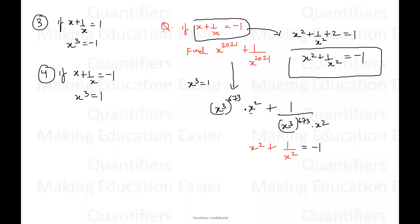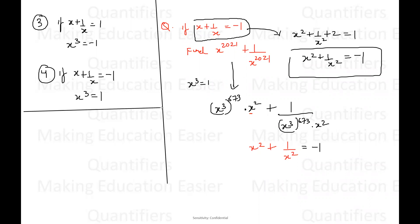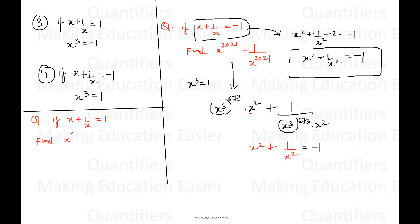Now let us see the question on the next result. Let's say the question is: if X plus one by X is equal to one, and we have to find X to the power 24 plus X to the power 21 plus X to the power 17 plus X to the power 14. So this is what we need to find.